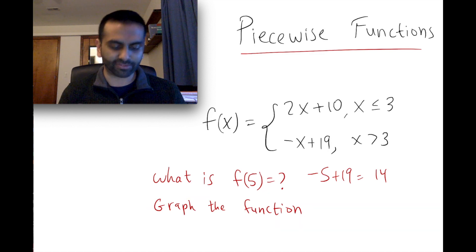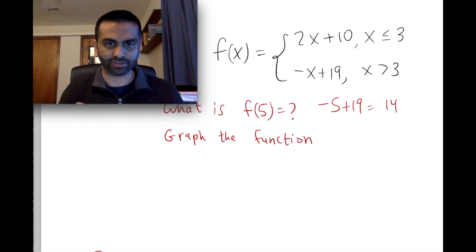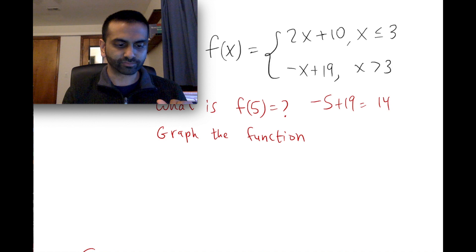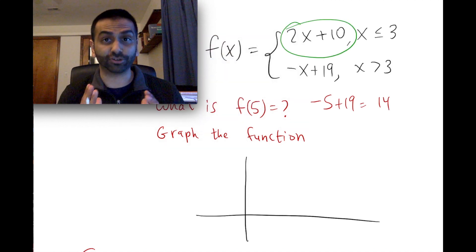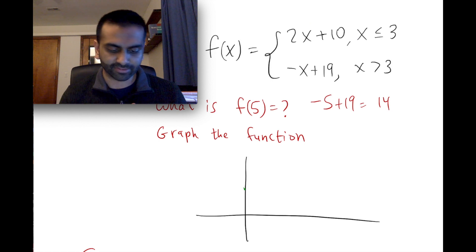Now let's say more broadly we're asked to graph the function. So graphing out the x and y axes here, essentially this function is this mx plus b, 2x plus 10, meaning the intercept is 10 and the slope is 2. So it's like this everywhere up until x is 3, so it's 3 or less.